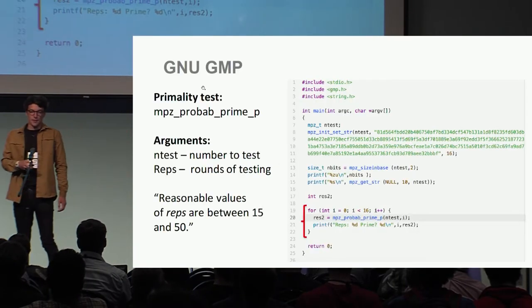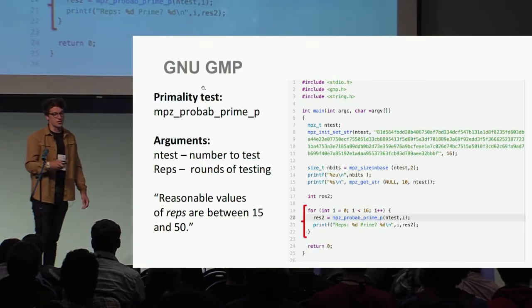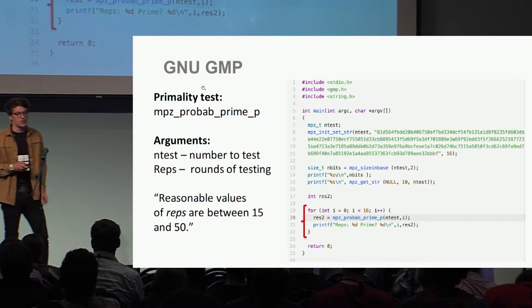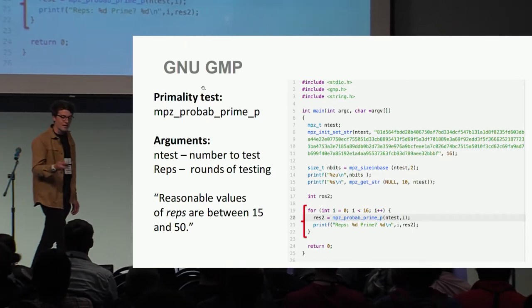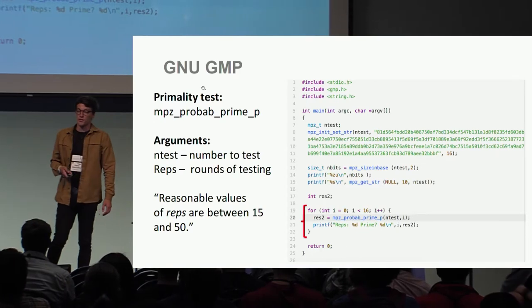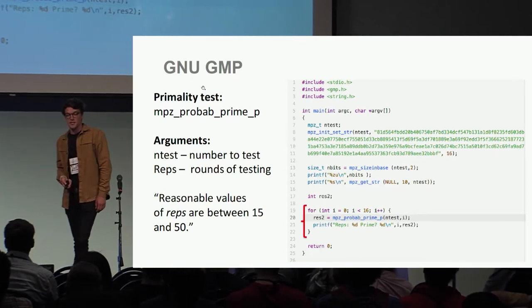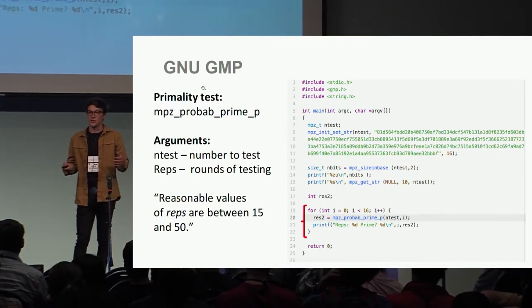I'm going to start with a couple of quick demos. First, we're going to look at GNU GMP and the primality test in GNU GMP, which takes two arguments: the number that we want to test, and reps, the rounds of testing that we're going to be performing.